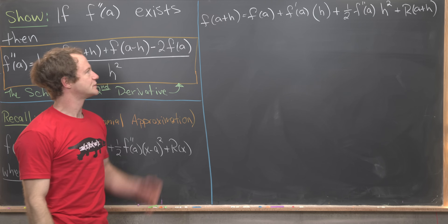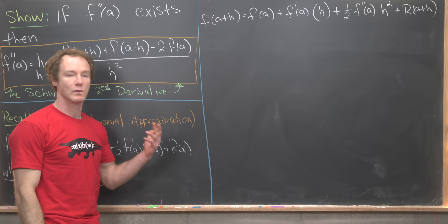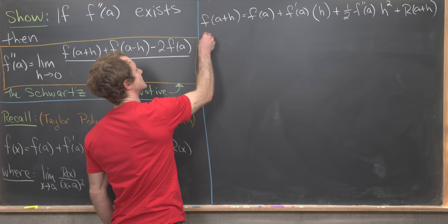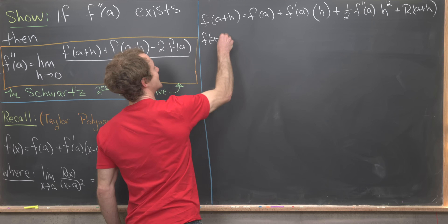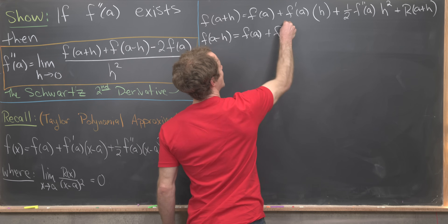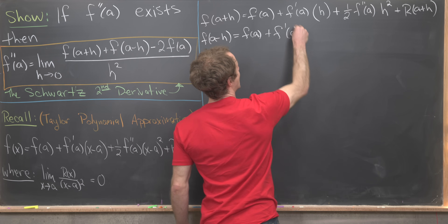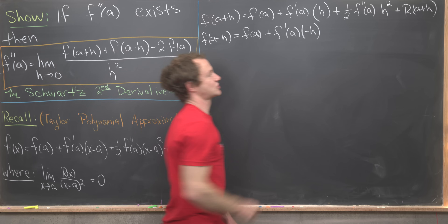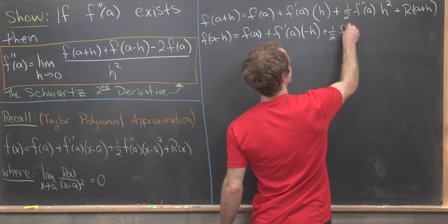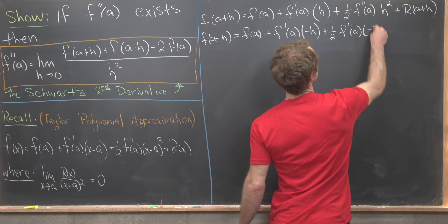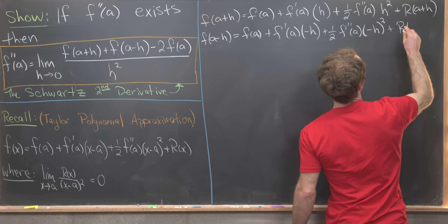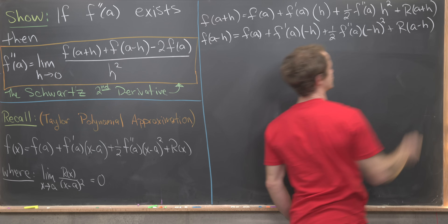We'll do essentially the same thing but plug in x equals a minus h. That gives us f of a minus h equals f of a plus f prime of a times negative h plus one half f double prime of a times negative h squared plus r of a minus h.